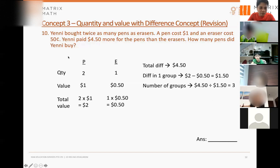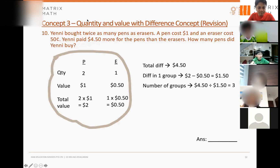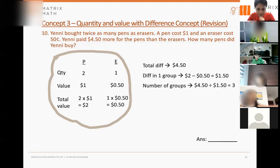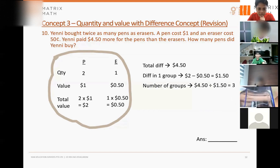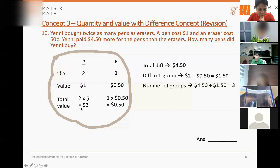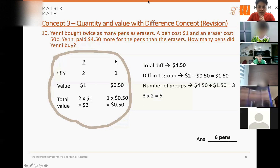Let me draw this out — three groups. How many pens did Yeni buy? Now that I know Yeni bought three groups, how do we calculate the number of pens? Joshua says six. How did you get six? Three times two — the two pens per group times three groups. Very good, six pens!